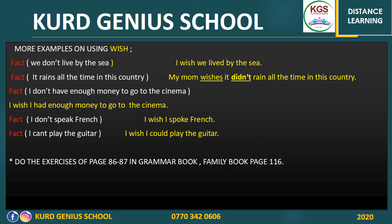My last note for you: do the exercise on pages 86 and 87 in your grammar book. Please do this exercise because it really helps you understand the lecture better. And remember, in your family book, we also have page 116 — there's an exercise about using wish with blank spaces to fill in. That's all about wish. I hope you understood from these lectures. Using wish is simply easy — don't get confused. Thank you very much.